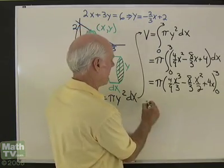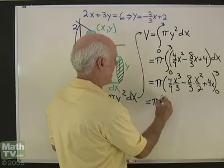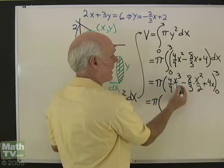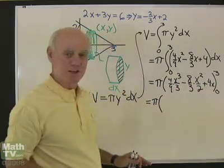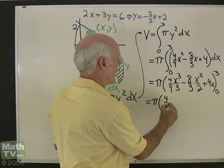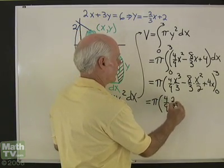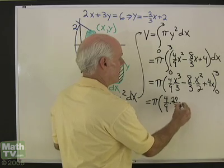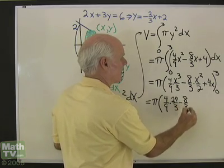Okay, so let's do that. Pi times, okay, when I put in 3 for x, 3 cubed is going to be 27, so I'll have 4 ninths times 27 thirds minus, here I have 8 thirds times...